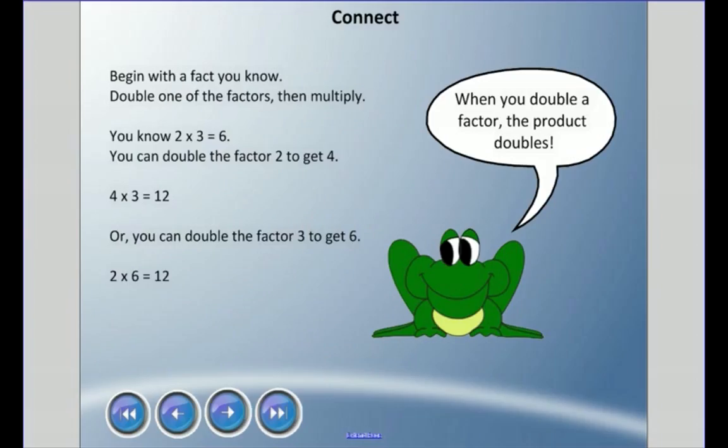The third strategy is: begin with a fact you know and double one of the factors, then multiply. You might know 2 times 3 is 6. Well, you can double the factor 2 to get 4. So 4 times 3 is 12. If this doubles, this has to double. 6 times 2 is 12. So no matter what, if I double a factor, the product will double.